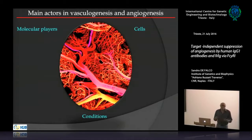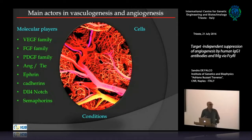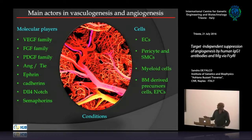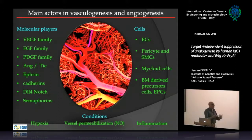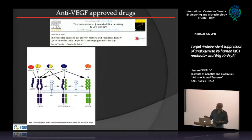Angiogenesis is a complex phenomenon involving many molecular players. The most important is the VEGF family, but many other factors and cell types are involved, including conditions such as hypoxia, permeabilization, and inflammation. Despite great efforts to generate different drugs targeting angiogenesis, the only real therapeutic target so far is the VEGF family.